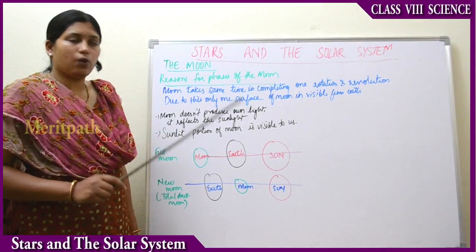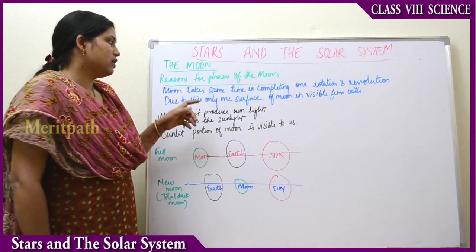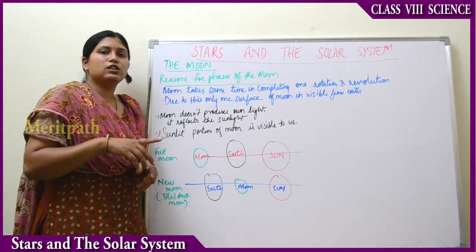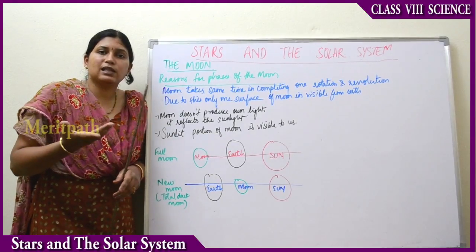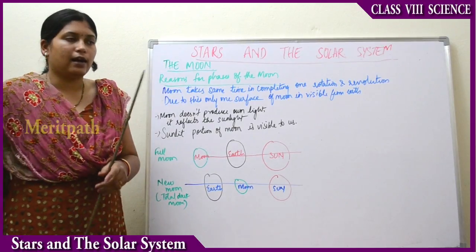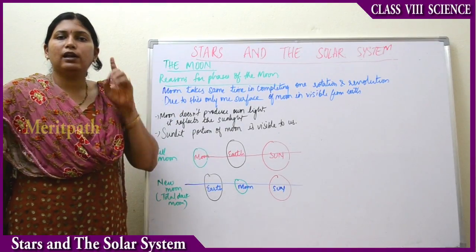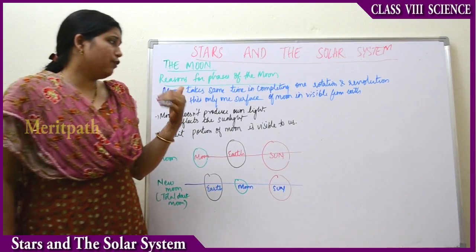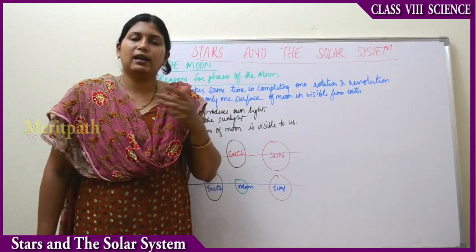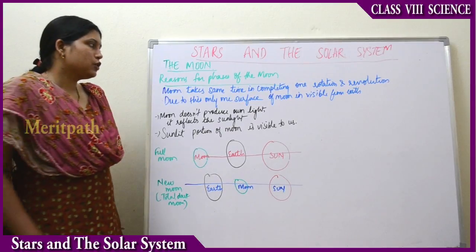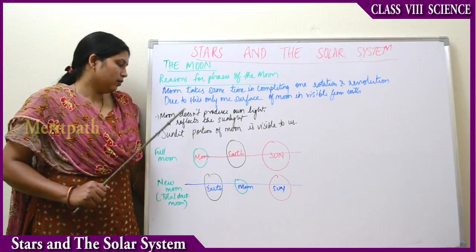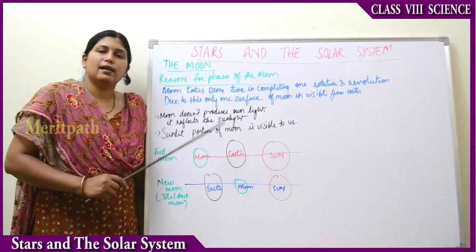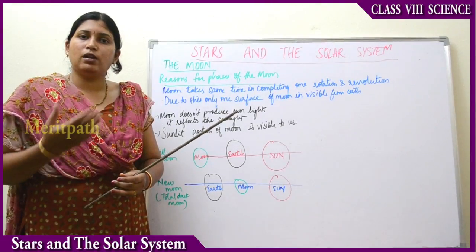Because the period of rotation and revolution of the moon is the same, only one surface of the moon is visible to us from the Earth — the surface which is lit by sunlight. Since the moon does not produce its own light and only reflects sunlight, we see only the sunlit portion. During the moon's revolution, different amounts of the sunlit surface are visible to us, causing the different phases.